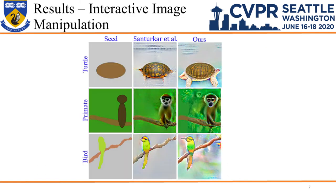For interactive image manipulation, notice the realism in the rightmost column. The ability of our perturbations to visualize the holistic semantics attached with the output neurons helps in explaining deep representation.